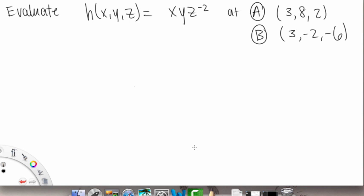For this problem we're going to evaluate the function of three variables, h of x, y, z is equal to x times y times z to the negative two. At the following points we have the point 3, 8, 2 and a separate point 3, negative 2, negative 6.